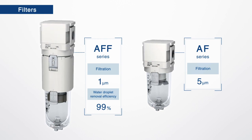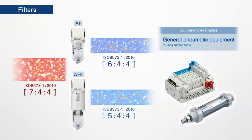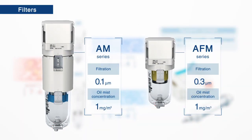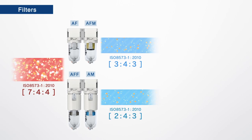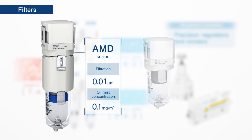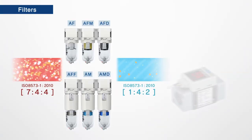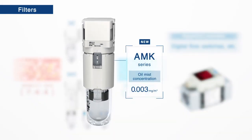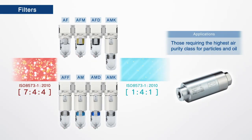AF and AFF filters are used with general pneumatic equipment like valves and cylinders. AFM and AM filters are used with precision regulators and ionizers. AFD and AMD filters are used with equipment like digital flow switches. The AMK is used where the highest air purity class for particles and oil is required.